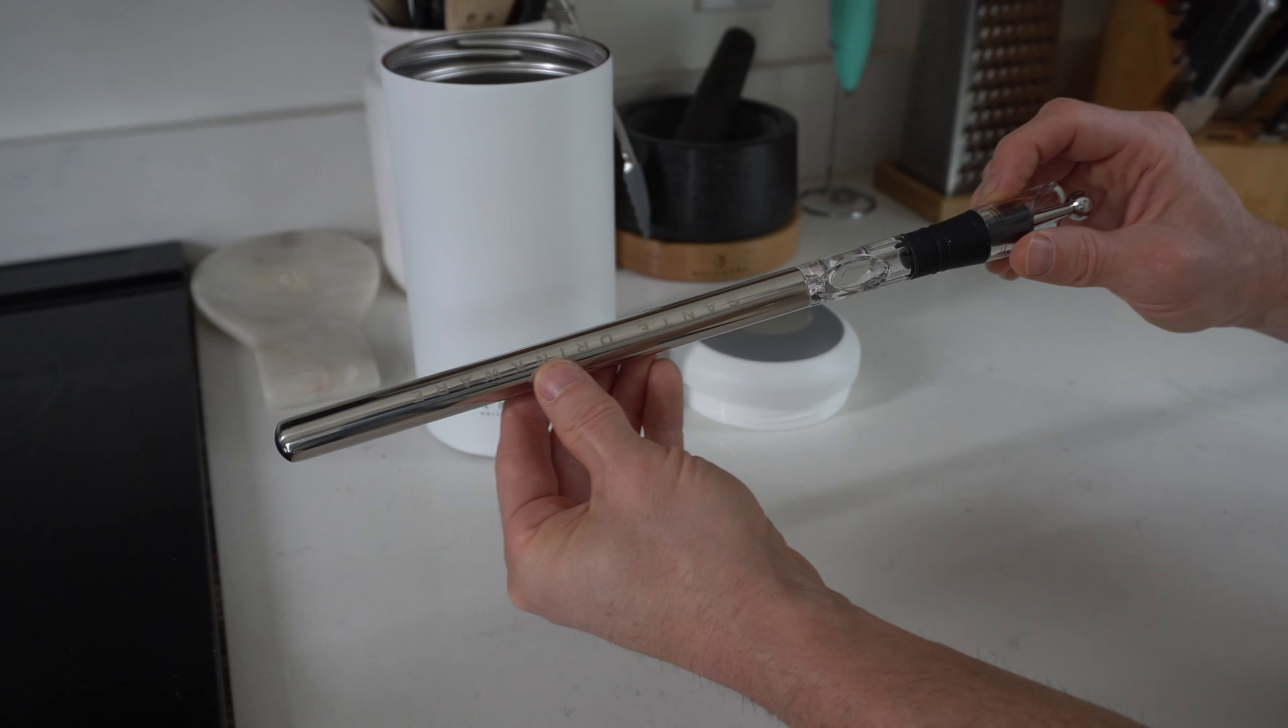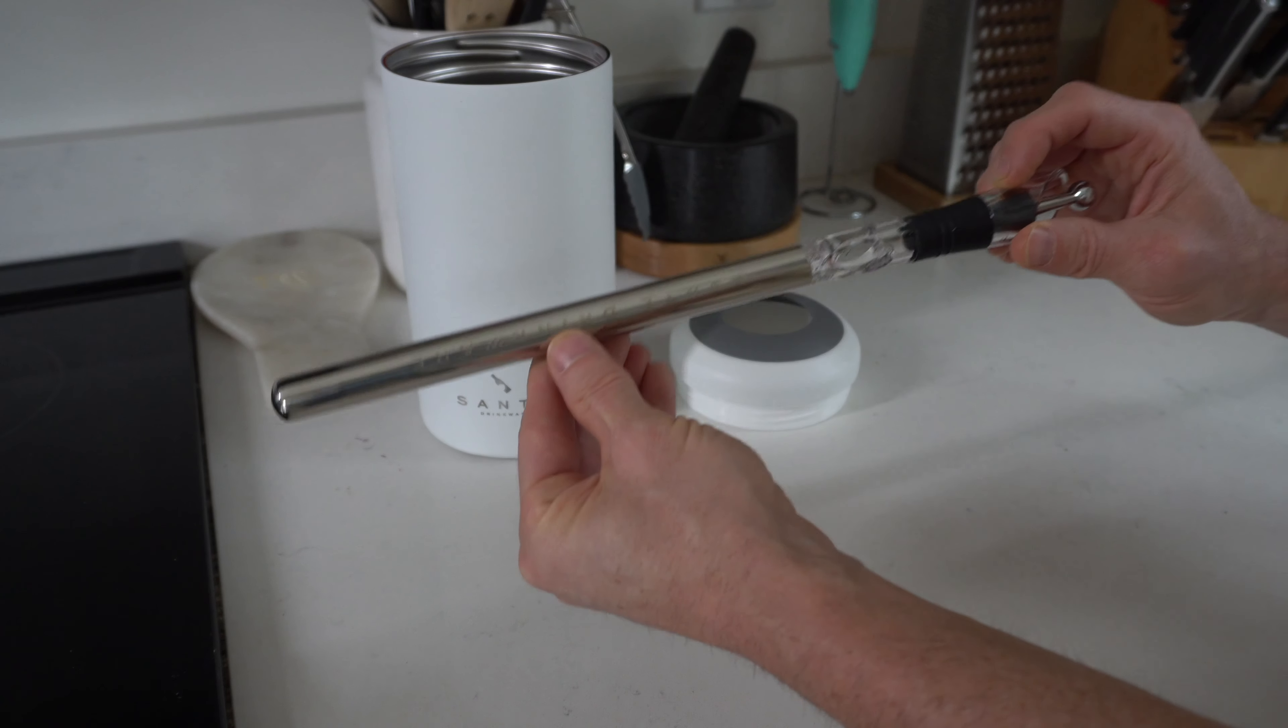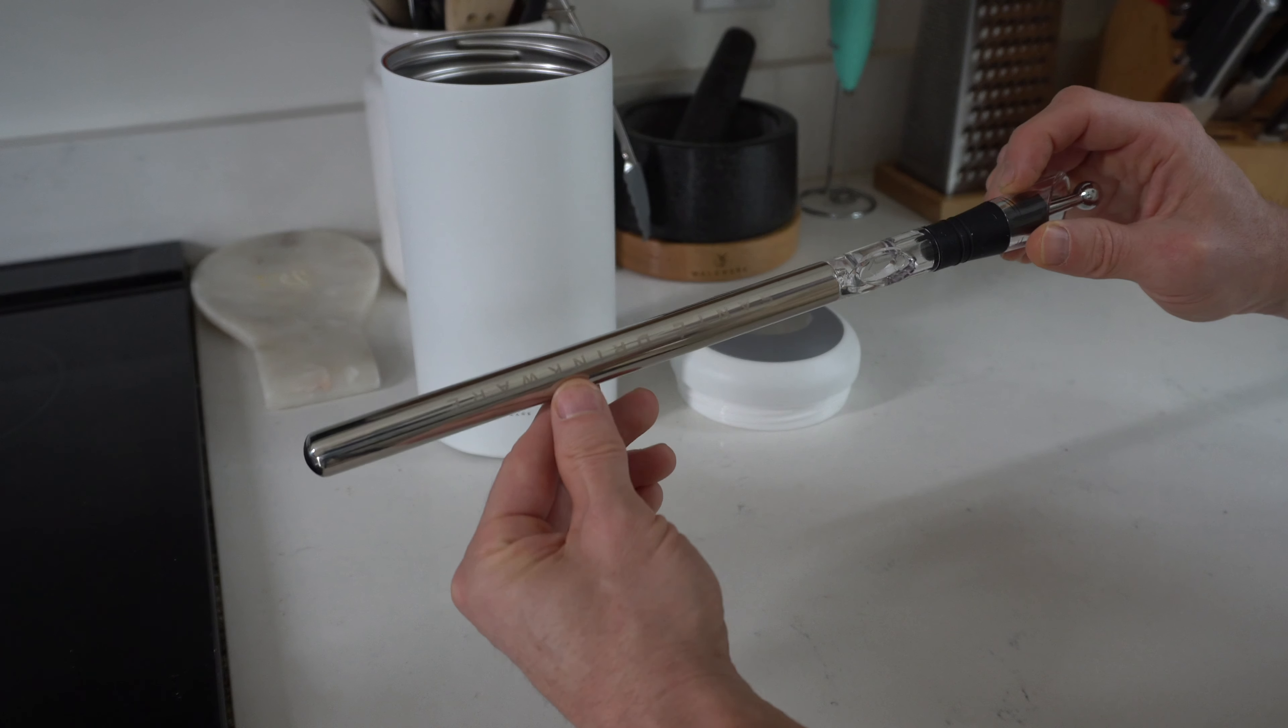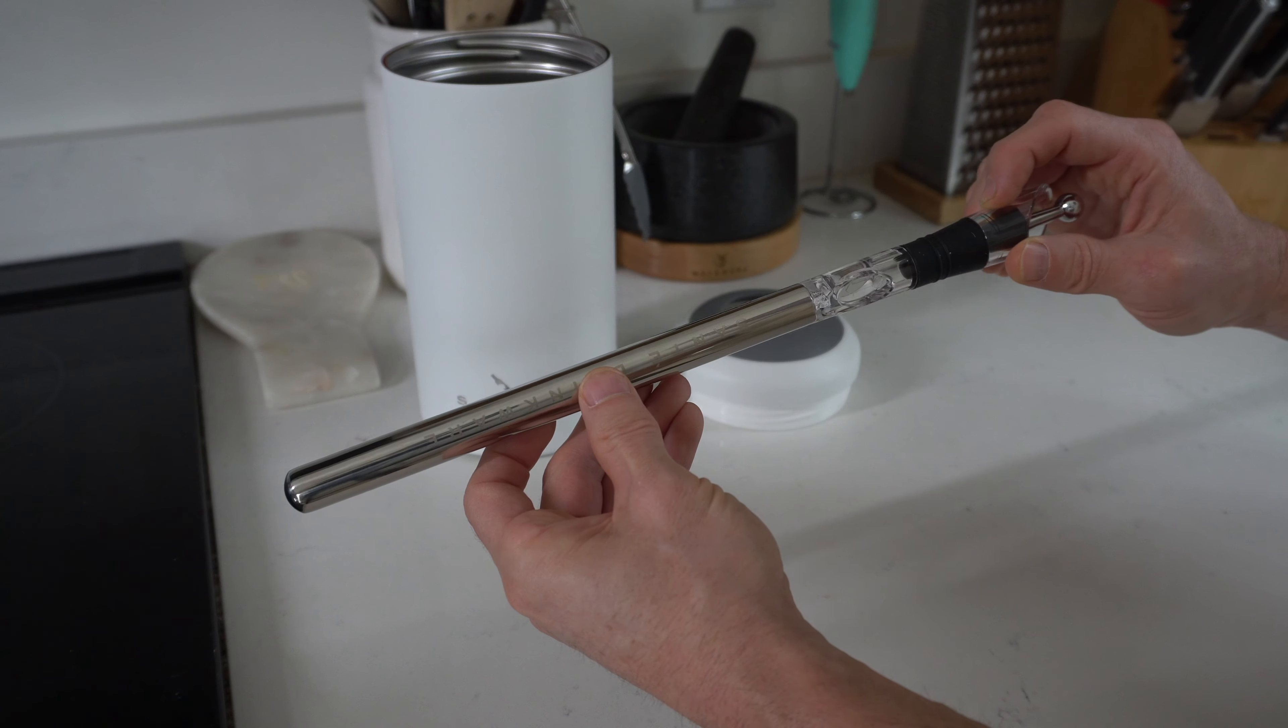Now the chill stick and the spout just twist together like this and you can put the stick into the freezer by itself if you want. They recommend freezing this for two hours before using it so it keeps your wine nice and cool.